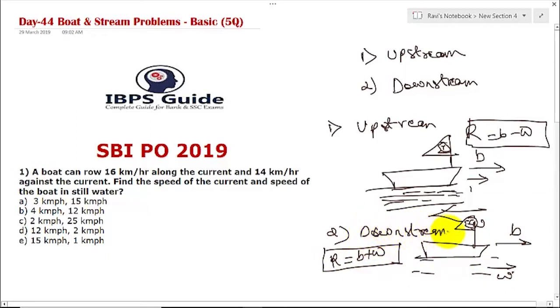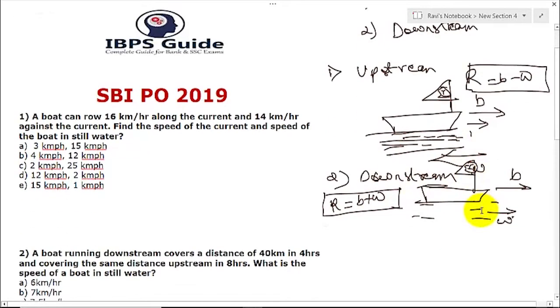These two are the most important concepts in boat and stream problems. Let us go to first problem. A boat can row 16 km along the current - that is downstream - so b plus w will be 16. And 14 km against the current - that is upstream case - so b minus w will be 14. Now find the speed of current and speed of boat.